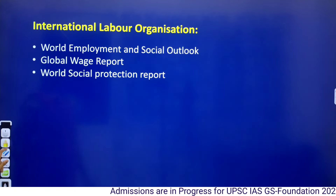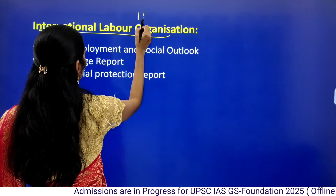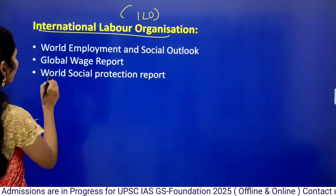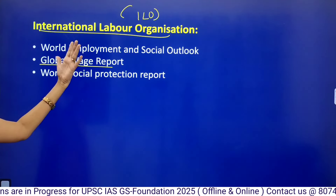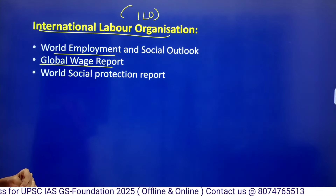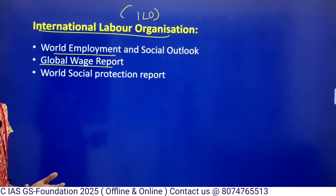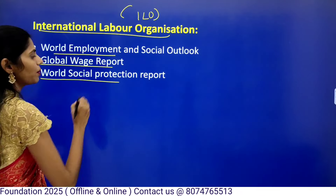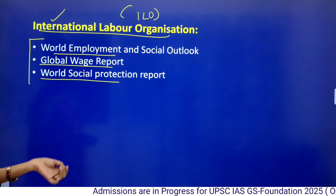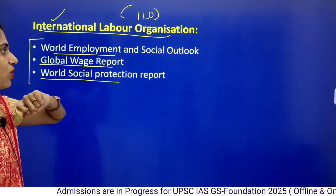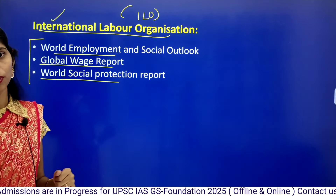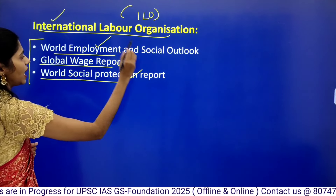Next is ILO — International Labour Organization. Labour relates to wages, so it releases the Global Wage Report. Labour also relates to employment, so it releases the World Employment and Social Outlook Report. Labour rights need protection, so it also releases the World Social Protection Report. These three reports are released by ILO.